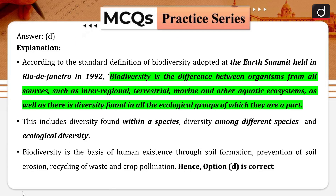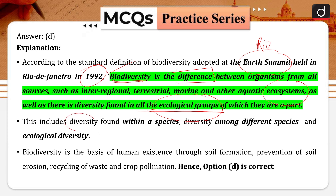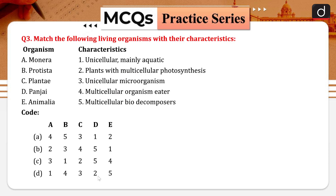Biodiversity is the difference between organisms from all sources such as terrestrial, marine, and other aquatic systems, as well as the diversity found in all ecological groups. This definition was given at the Rio Earth Summit in 1992. Biodiversity includes diversity within species, among different species, and ecosystem diversity. Option D is the right answer.